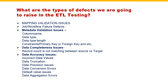Next is data aggregation errors or defects. For example, you are calculating department-wise salary by summing it up. If that is not done properly, then these kinds of errors we are going to see as part of ETL testing. Other than that, very important and very common: data duplication. Most of the times in interviews they will ask you to write a query to identify duplicate records. Duplication is also something we are going to consider.